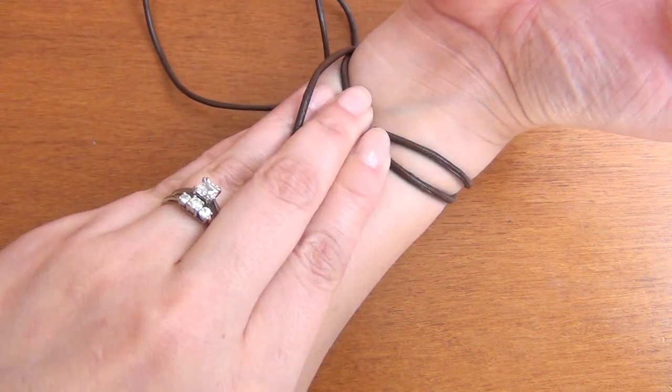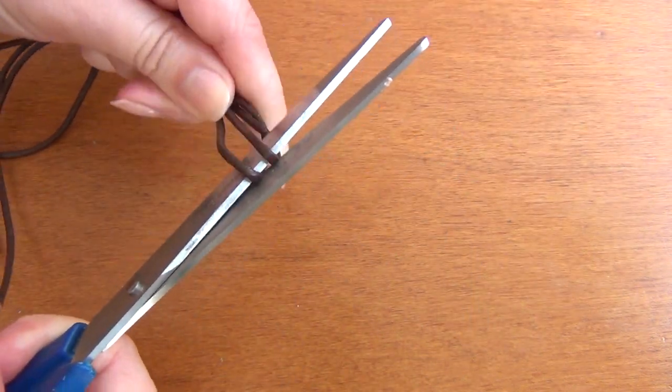To start, you'll want to measure your lace to fit two times around your wrist and then subtract one inch. Then cut four pieces of your lace or cord to that measurement.